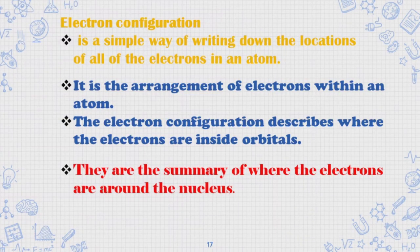Electron configuration is a simple way of writing down the locations of all of the electrons in an atom. It is the arrangement of electrons within an atom. The electron configuration describes where the electrons are inside orbitals. They are the summary of where the electrons are around the nucleus.